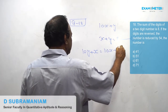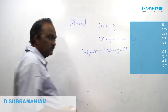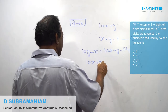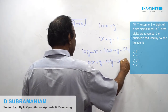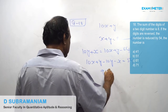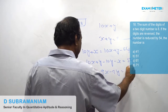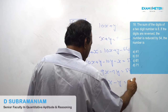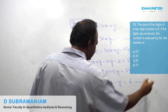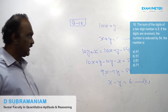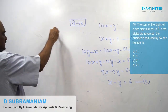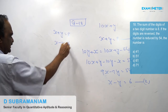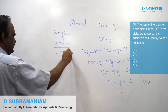So 10x + y − 10y − x = 54, which gives 9x − 9y = 54, and x − y = 6. The first equation is x + y = 8 and the second is x − y = 6. Adding these, 2x = 14.